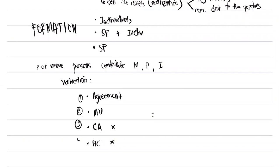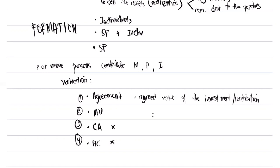The hierarchy starts with agreement — the agreed value of the investment or contribution. For example, if you contribute a brand-new car purchased for 1.3 million pesos and the partners agree to value it at 1 million pesos, you use 1 million pesos. That is based on the agreement.